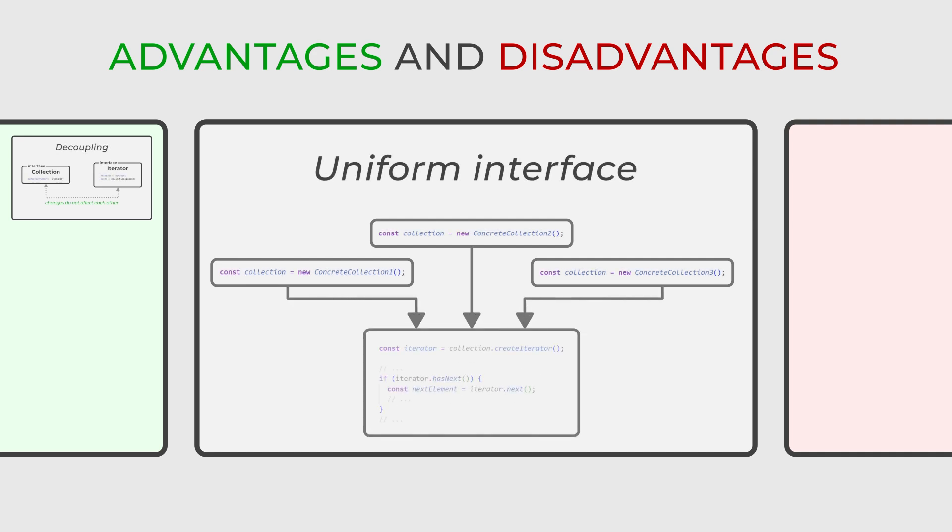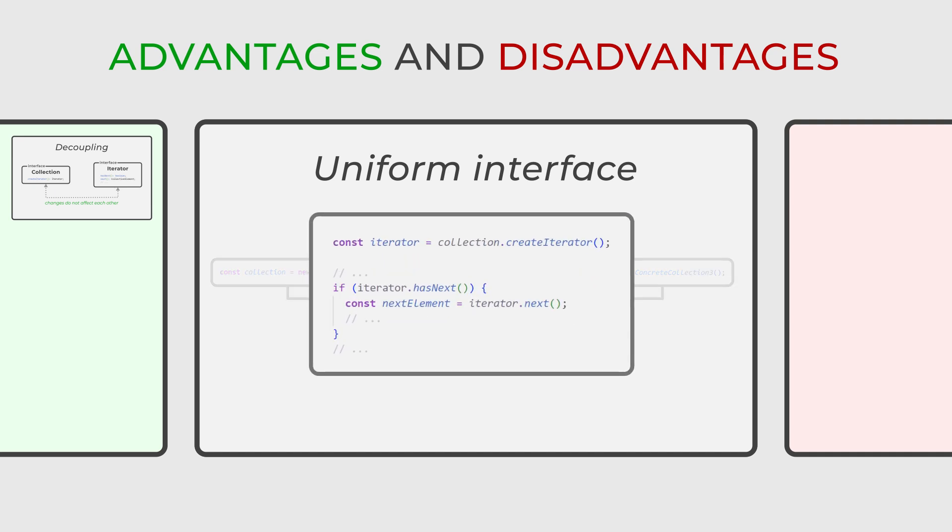Additionally, the iterator pattern provides a uniform interface, ensuring a consistent and straightforward way to access elements across different collections. This uniformity significantly simplifies the client code, making it easier to manage and understand.